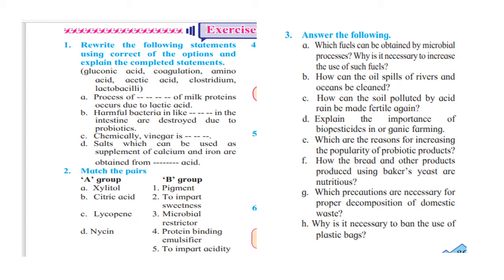Question number 3c: how can the soil polluted by acid rain be made fertile again? That is on page number 85, first paragraph, from 'sulphuric acid' till 'acid rain.' Question number 3d: explain the importance of bio-pesticides in organic farming. That answer is also on page number 85 — the last three paragraphs starting from 'some microbes' till the end, covering bio-pesticides.